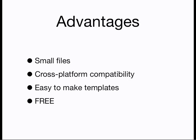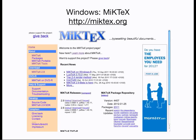In the next screencast we'll get started with making your first LaTeX document. But between now and then, you'll need to gain access to LaTeX. There are several ways to do this. If you're a Windows user, the standard LaTeX system is called MiKTeX, and can be downloaded and installed from MiKTeX.org.